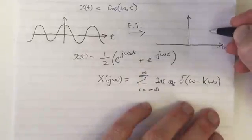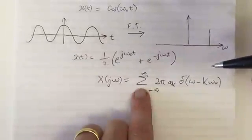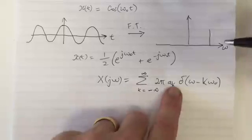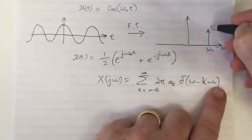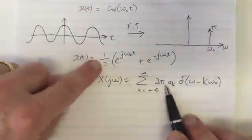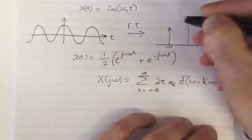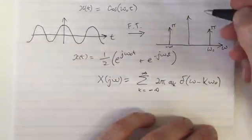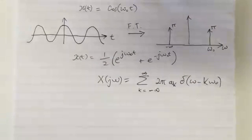When we look at our picture, we're drawing this summation, but there are only two delta functions that exist in this summation. All the rest is zero. We have one at ω₀ of height π (because this is 2π times 1/2), and we have one at -ω₀ also of height π. This is the Fourier transform of cos(ω₀t).